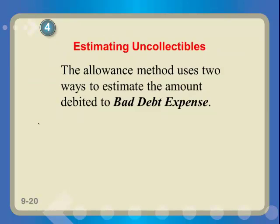Those were the two bad debt methods — the direct write-off and the allowance account. Now let's talk about how to estimate that number. With the direct write-off you don't estimate anything — you just write it off when uncollectible. But with the allowance method you do have to estimate. So how did they get that $30,000 in the previous example?